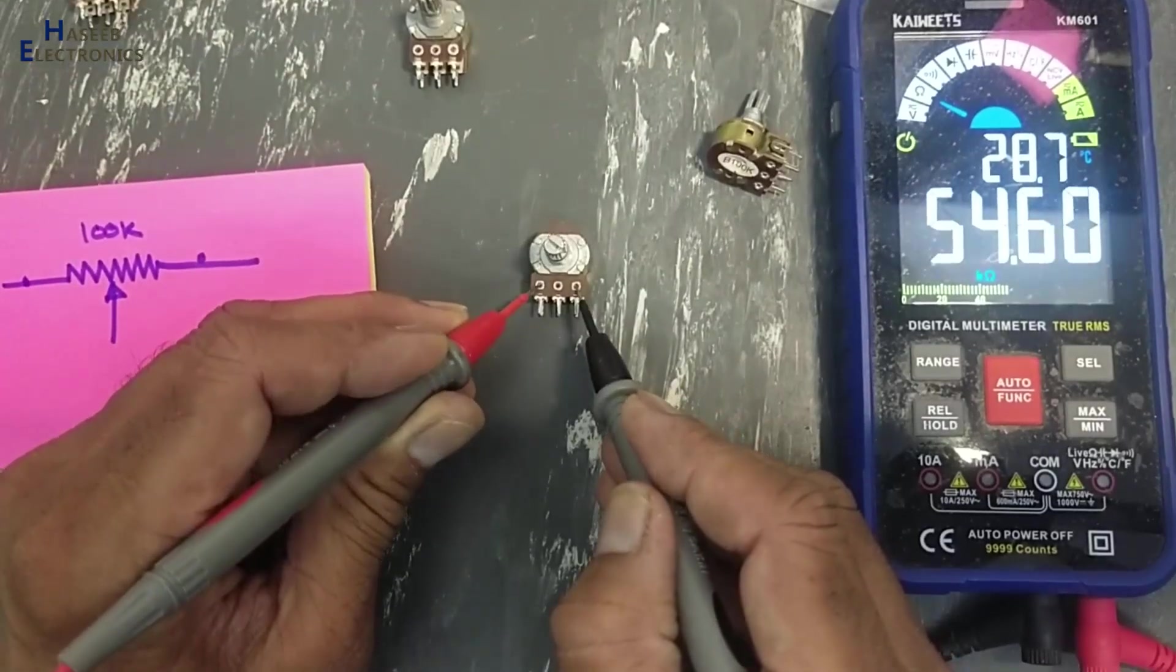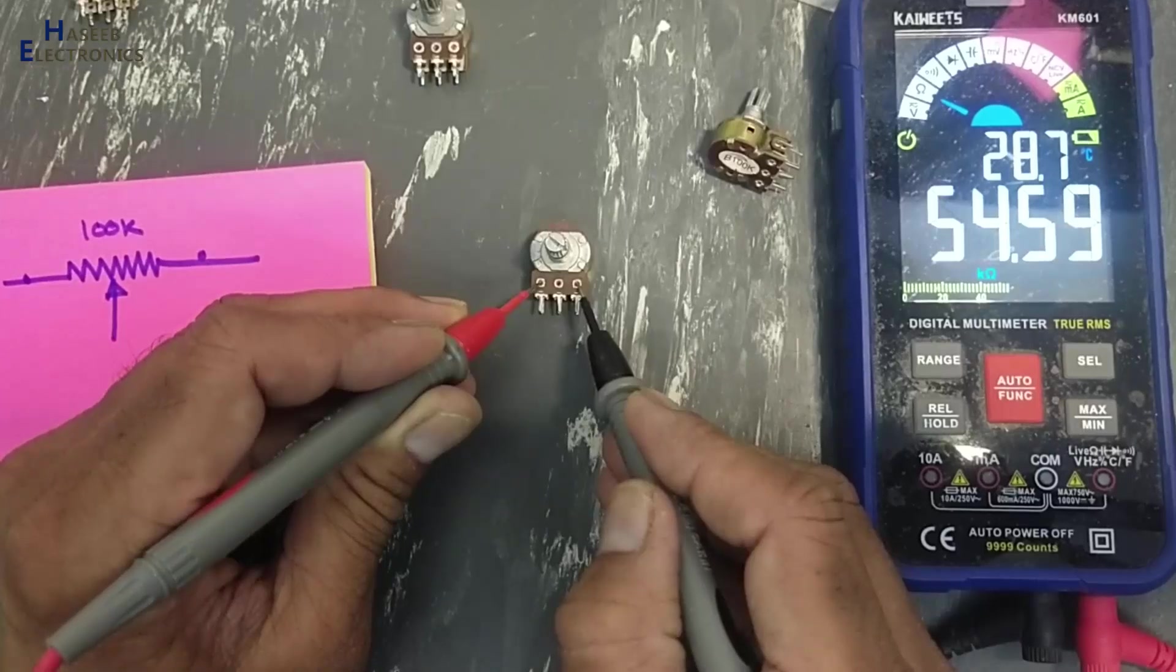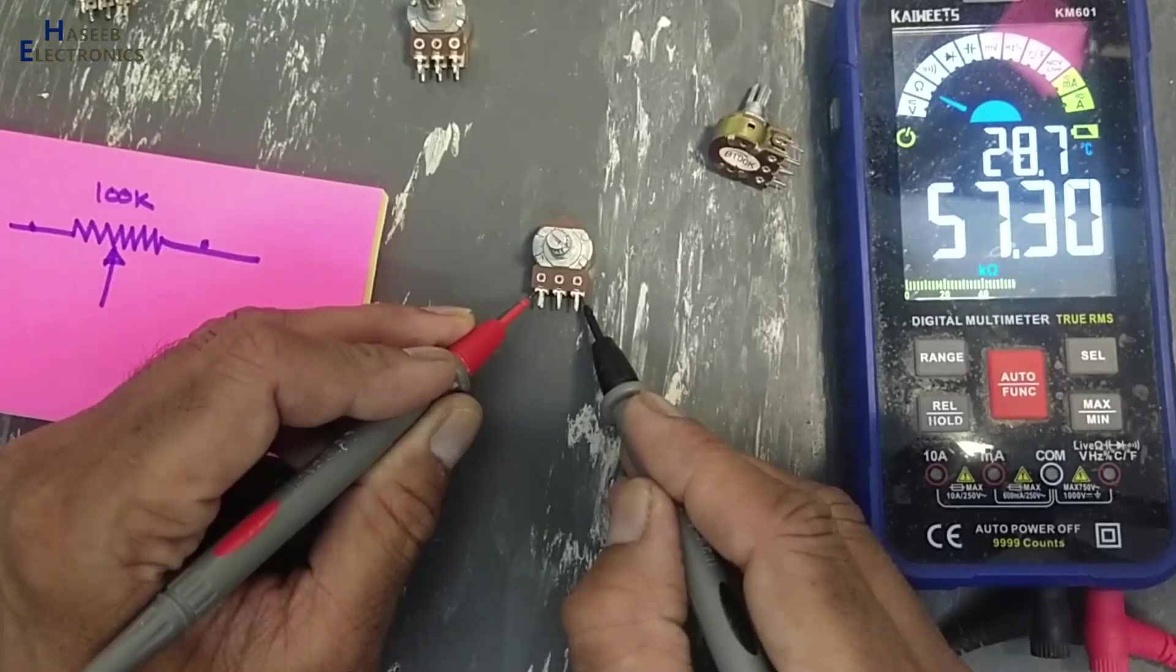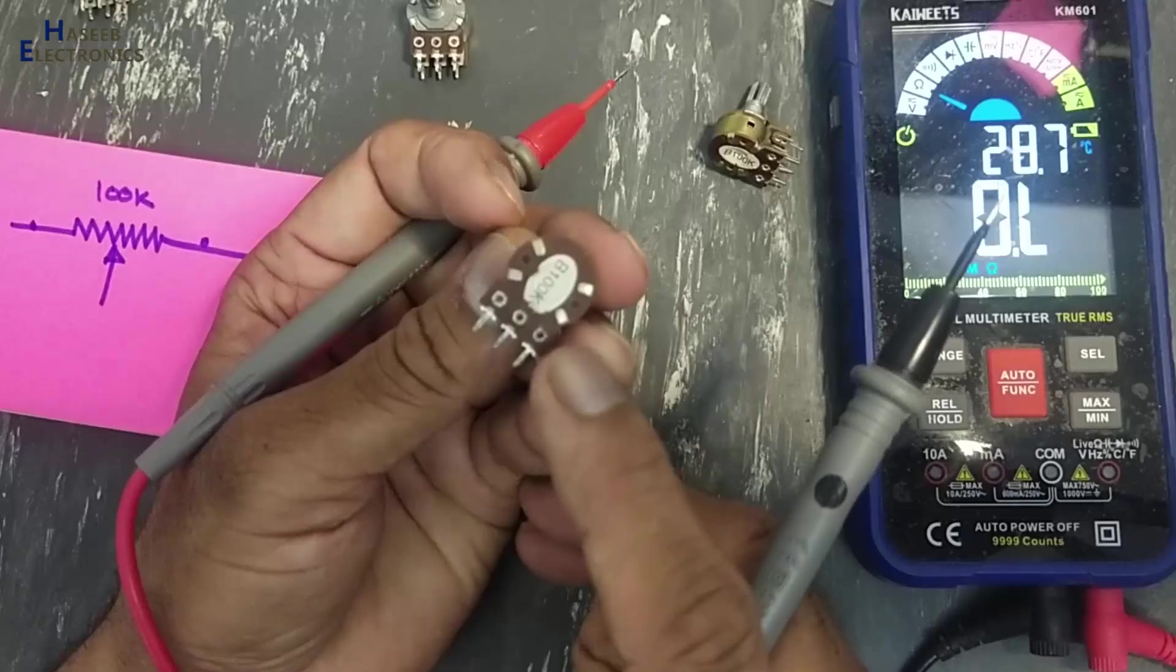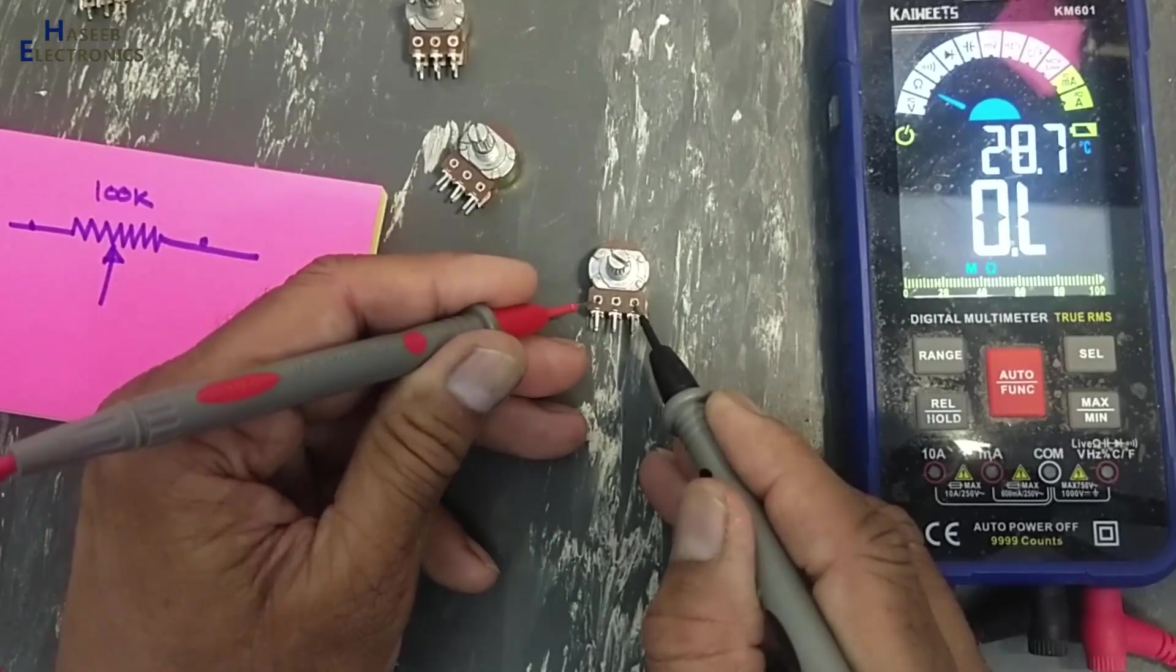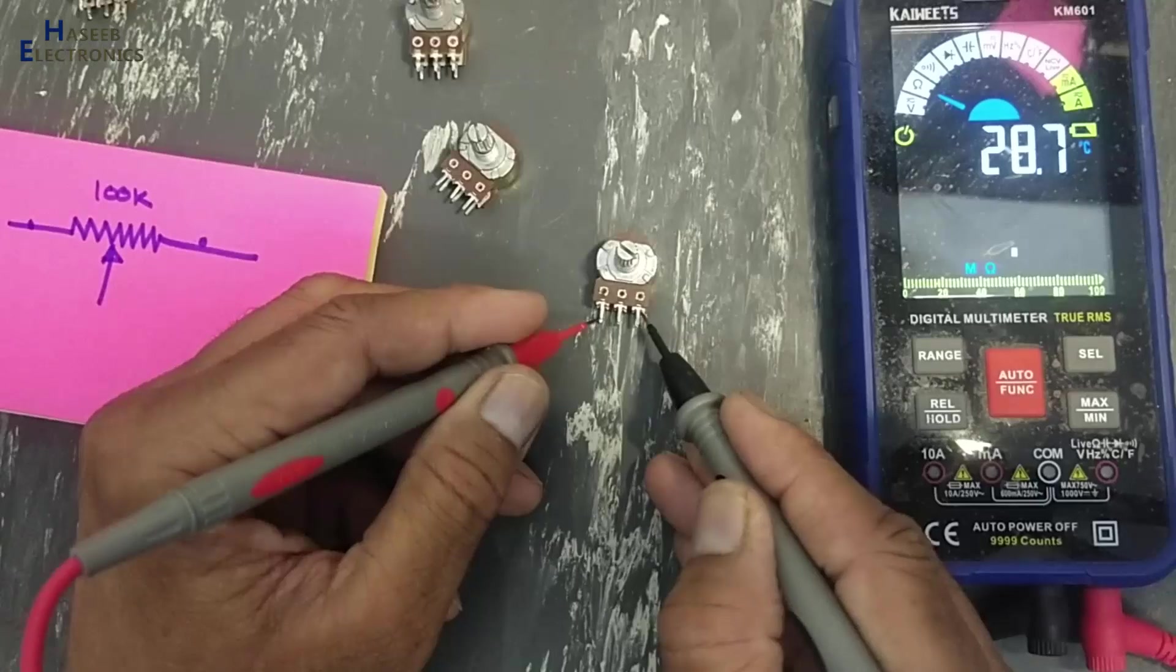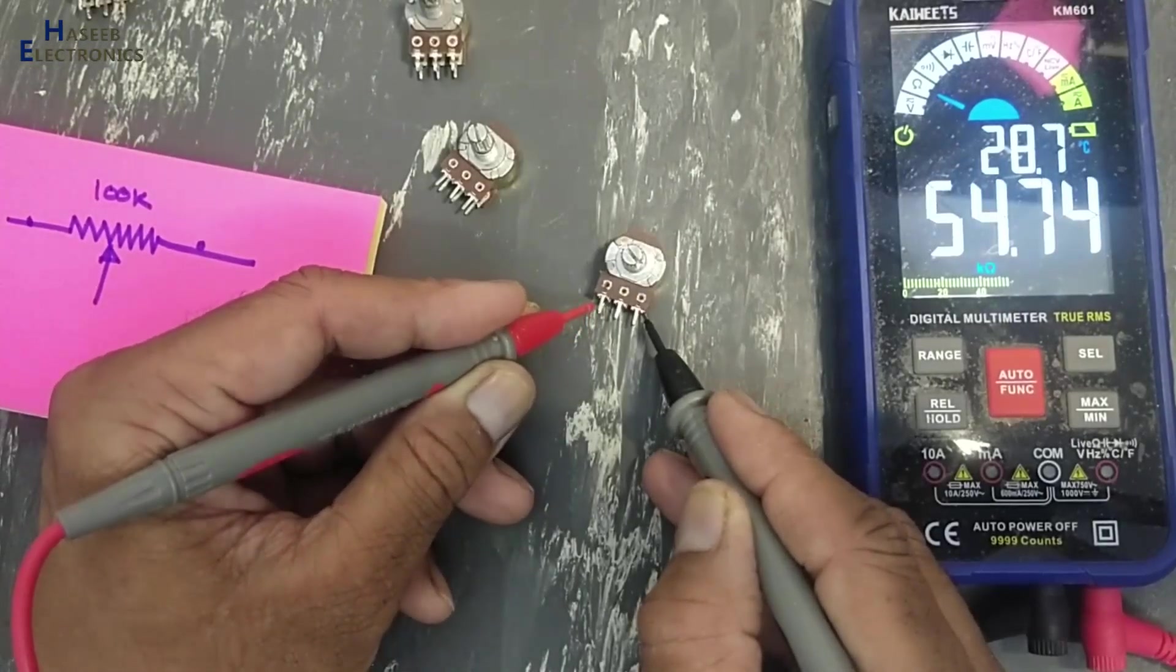If we check its resistance value, it is 54.5k - that's wrong. The second stage is 57k, while the marking on the component is 100k. If we check this one, the second side is 54k, and the second side 54k.